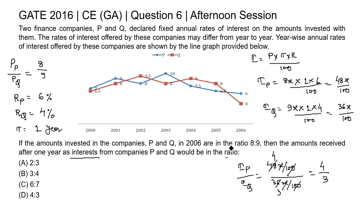So the ratio of amount received after one year as interest from company P and Q is 4 to 3. This is given in option D, so option D is the correct answer for this question. Thank you.